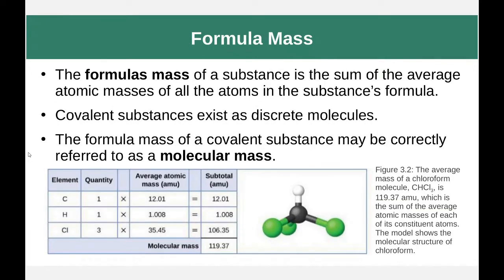The formula mass of a substance is the sum of the average atomic masses of all the atoms in the substance's formula. We take our molecule or compound, look up the masses in the periodic table, and multiply by how many of each atom we have. Then we add them all together, and we get the mass of that entire unit.